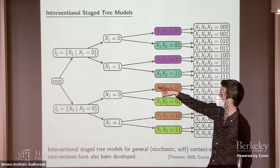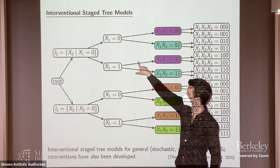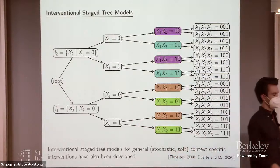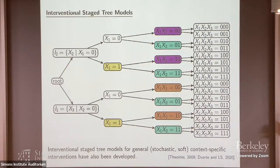So now we start to see the issue. We have these very simple-to-define models that are highly expressive, but I only have three binary variables in two experiments and it takes up the entire wall. It's quite difficult to look at this massive picture and read off immediately causal information in the way that we like to do with causal Bayesian networks.